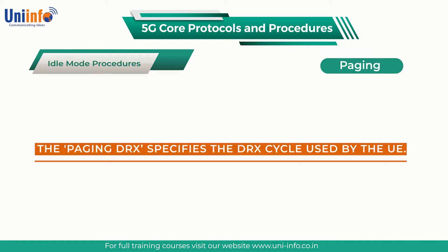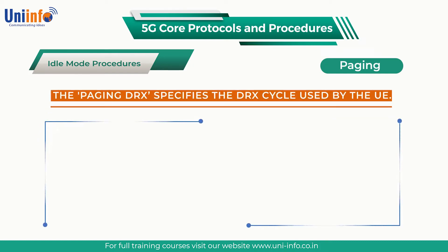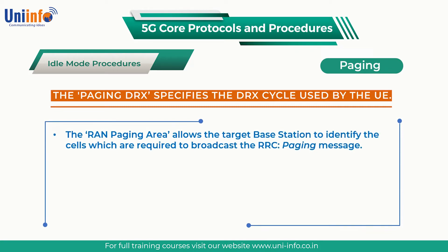The paging DRX specifies the DRX cycle used by the UE. This value allows the target base station to identify the appropriate paging frames and paging occasions. The RAN paging area allows the target base station to identify the cells which are required to broadcast the RRC paging message.